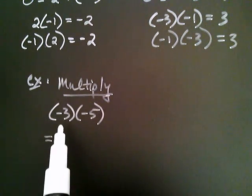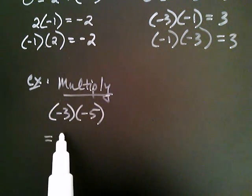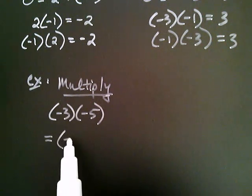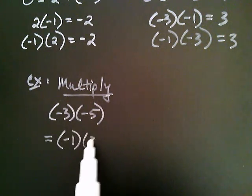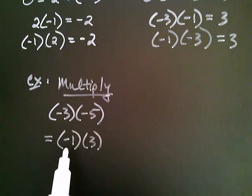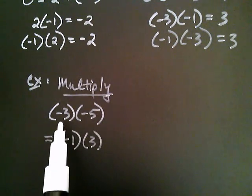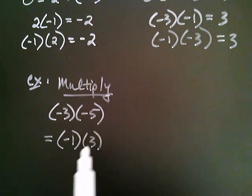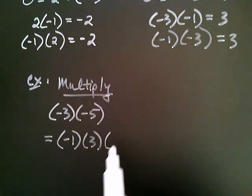Does that make sense? Isn't negative one times three equal to negative three, from what we discussed a moment ago? And if I just leave the negative five alone for a minute...